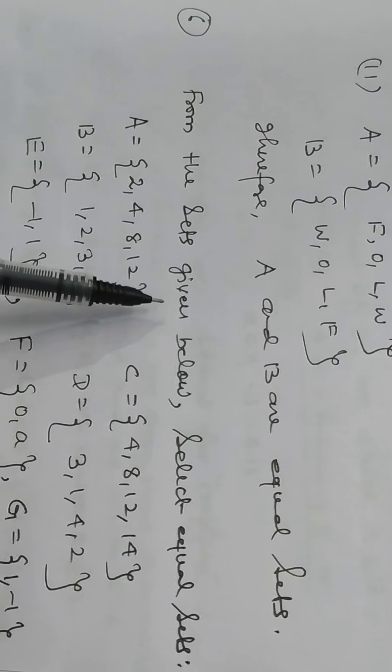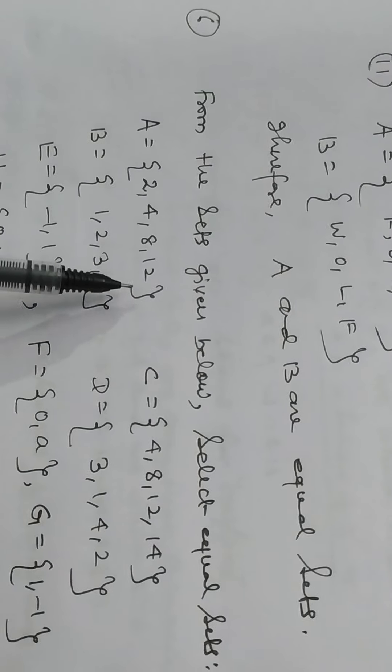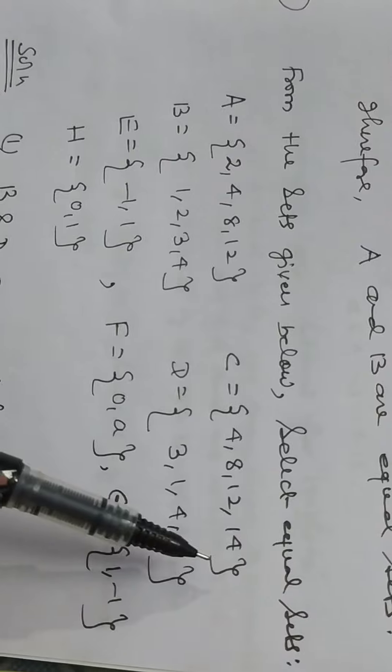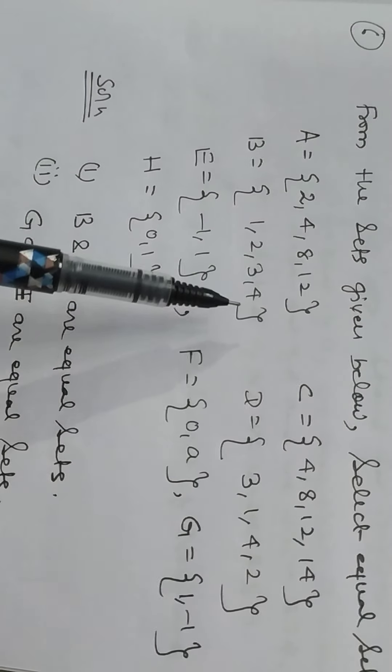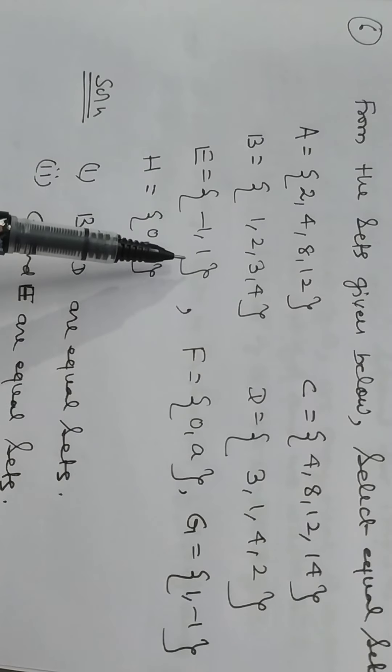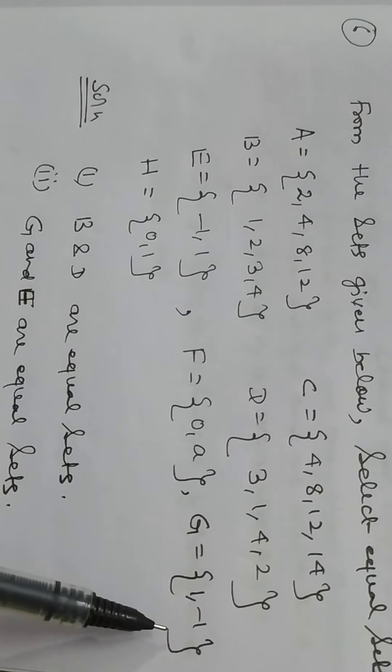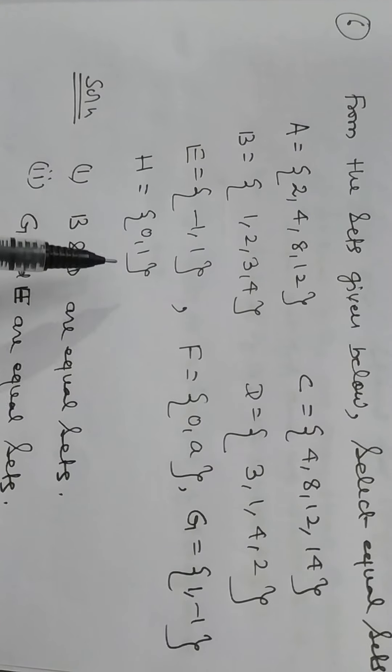From the sets given below, select equal sets. A: 2, 4, 8, 12. C: 4, 8, 12, 14. B: 1, 2, 3, 4. D: 3, 1, 4, 2. E: minus 1, 1. F: 0, A. G: 1, minus 1. H: 0, 1.